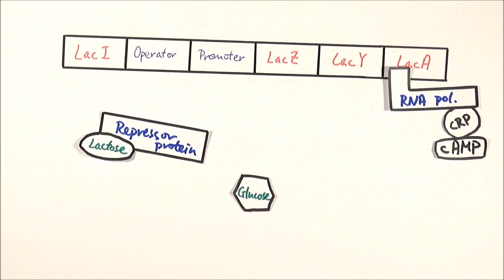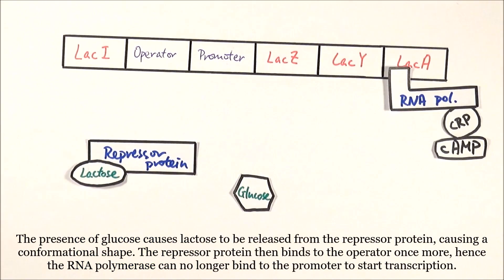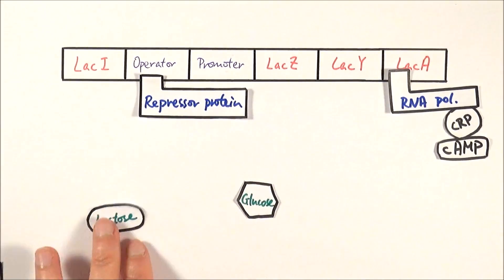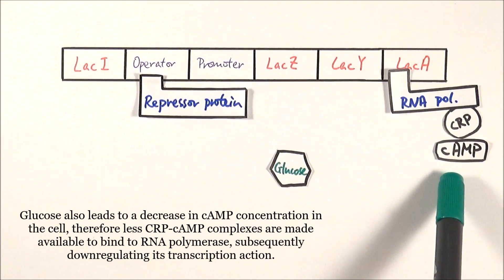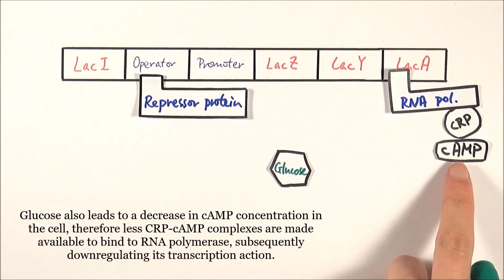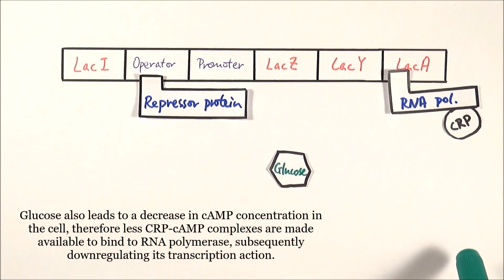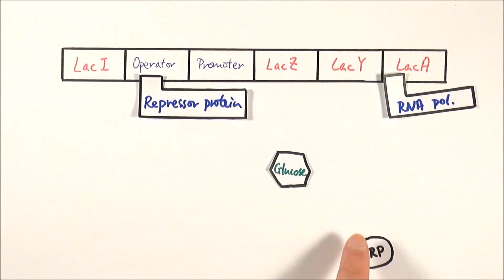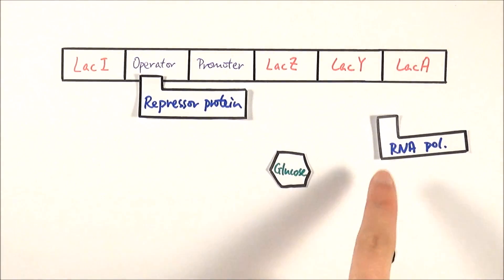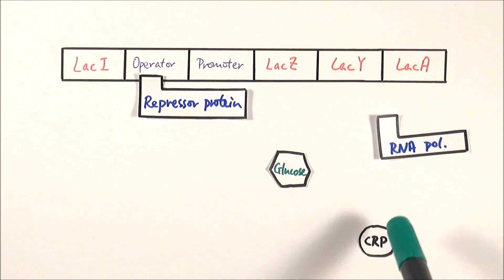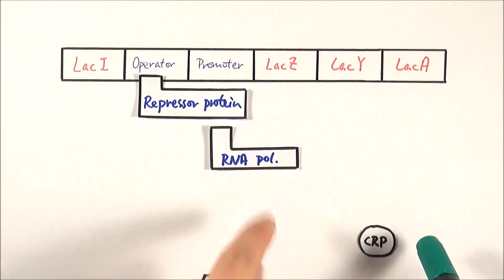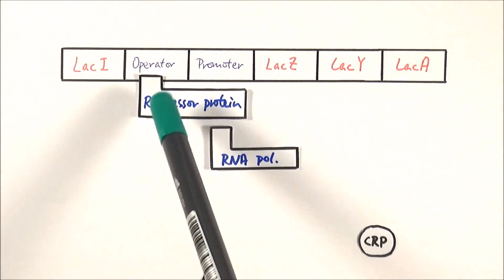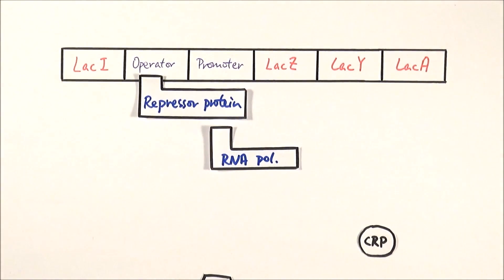After a while, if glucose becomes available again, and because prokaryotes prefer glucose over lactose, lactose will release the repressor protein and restore its shape, so the repressor protein can bind to the operator again. At the same time, the presence of glucose decreases the concentration of cAMP within the cell, which is removed from the CRP. Because CRP can only function when cAMP is bound to it, it loses its function and is removed from the picture. The RNA polymerase can no longer work efficiently, and the repressor protein — now bound to the operator — blocks access to the promoter, stopping transcription entirely. The cell returns to using glucose as a substrate for respiration.